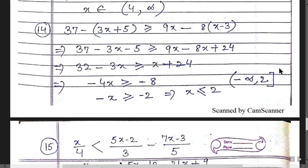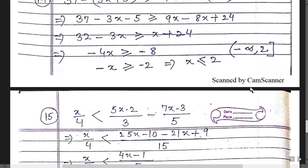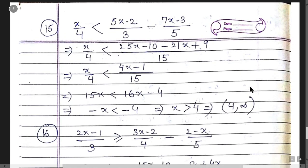Question 15: Take LCM on the right-hand side. Simplifying gives 4x - 10 + 9 = -1. Cross-multiplying: 15x < 16x - 4, giving -x < -4, so x > 4. The sign changes from less than to greater than because of the negative. The answer is (4, ∞) with open brackets.